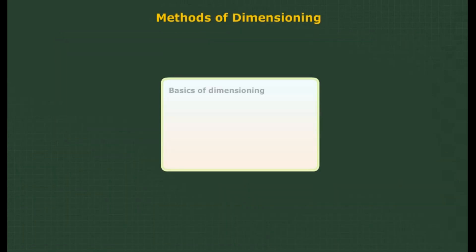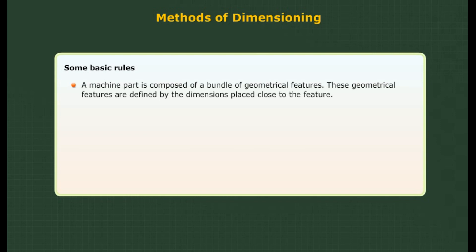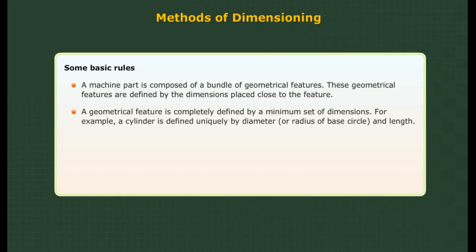Methods of dimensioning covers: basics of dimensioning, general rules for dimensioning features, holes and centers, and curved and tapered features. A machine part is composed of a bundle of geometrical features. These geometrical features are defined by the dimensions placed close to the feature. A geometrical feature is completely defined by a minimum set of dimensions.